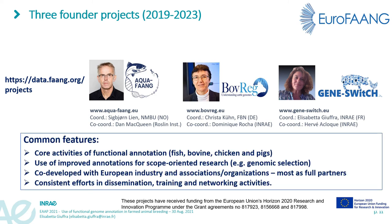Rather than providing detailed outlines of each project, I prefer to highlight their common features. They have core activities of functional annotation in fish species, bovine, chicken, and pigs. All of them include work packages aiming at using improved annotation for applied research, for example improving models for genomic selection. They also co-developed together with European industry and associations as full partners in a real process of co-creation, and all include consistent efforts for dissemination, training, and networking activities.